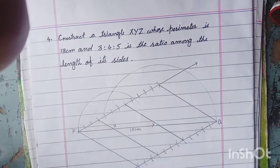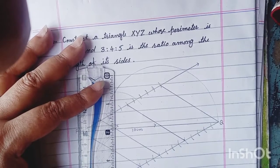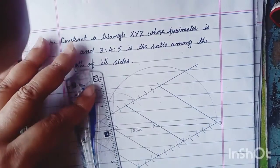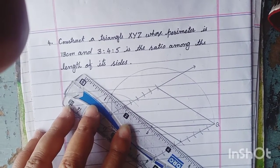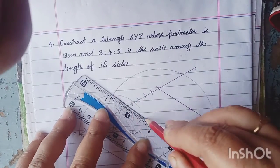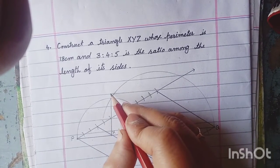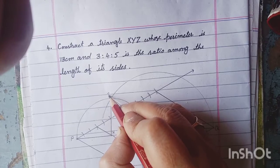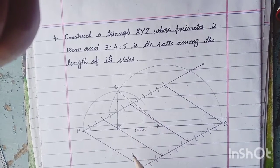یہ ہمارا required point آگیا — اس کو X اور Y کے ساتھ join کر لینا ہے. یہ point Z ہے جہاں دونوں arcs ملی ہیں. Point کو point کے ساتھ join کریں گے — Z سے X اور Z سے Y. آپ لوگ نے scuba کے ساتھ بھی join کرنا ہے. اب ہمارے پاس triangle XYZ بن گئی — یہ required triangle ہے.